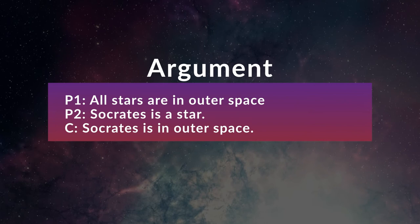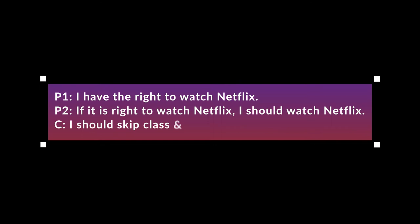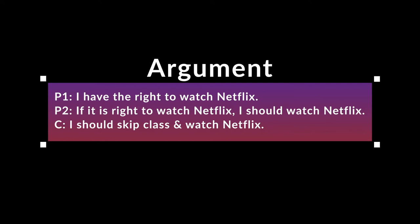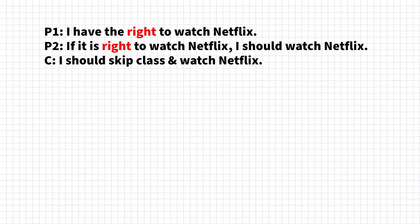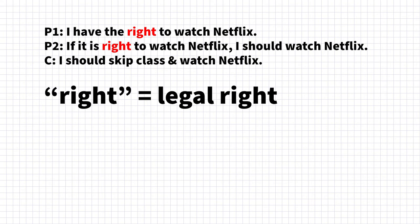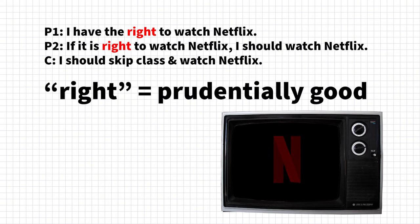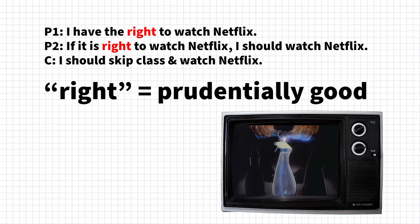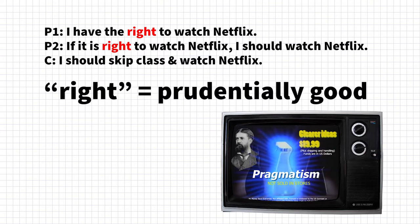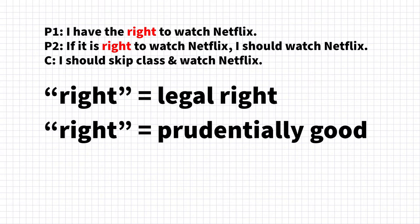One more silly example. Premise one: I have the right to watch Netflix. Premise two: if it is right for me to watch Netflix, then I should skip class and watch Netflix. Conclusion: therefore, I'll skip class and watch Netflix. This again is the equivocation fallacy. Premise one is true if 'right' is understood in terms of a legal right — you can do it without state interference. Premise two is only acceptable if 'right' is interpreted differently, namely that it's prudentially good for me to watch Netflix — it would make my life go better. The conclusion would only follow if 'right' has the same meaning, not the two different meanings needed to make the premises true.